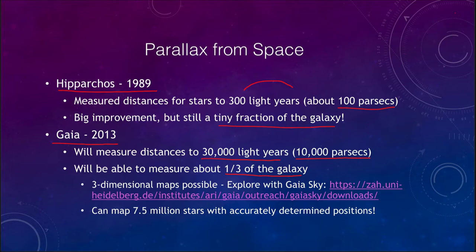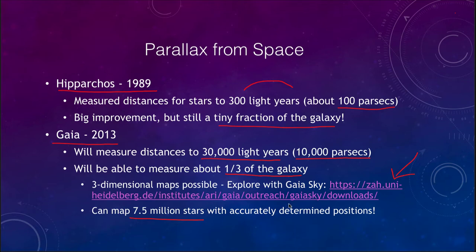Parallax is really the only direct measurement of distances that we have — the only way to directly determine distances to the stars — and it will be our base for using other methods to determine distances to distant galaxies. Being able to get accurate maps for seven and a half million stars is a big jump from what could have been done just decades before. You can go to the Gaia Sky website to download software and actually make three-dimensional maps of the galaxy.